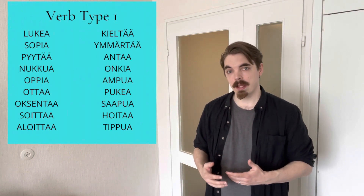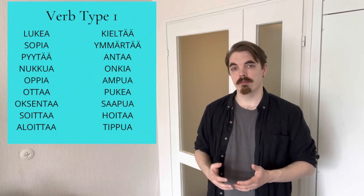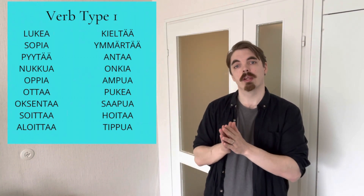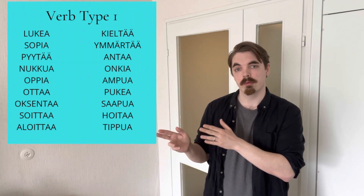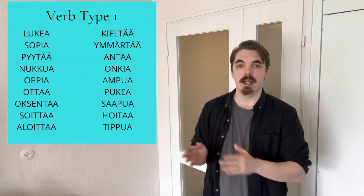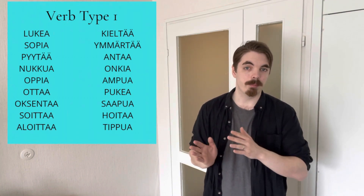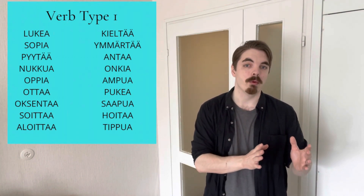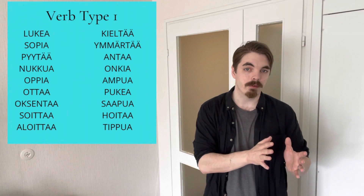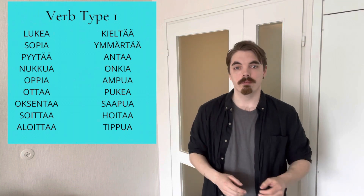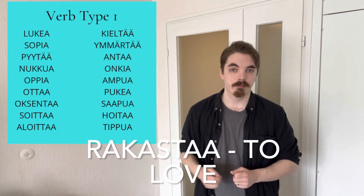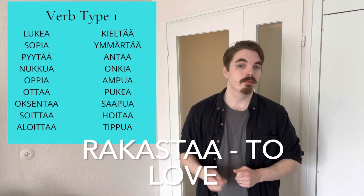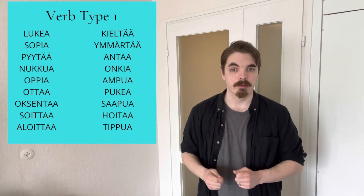Remember that consonant gradation only applies to those consonants that come right before the two vowels at the end of the word. Any consonants that appear earlier in the word are unaffected — so the K in ROKASTA, for example, stays right where it is.